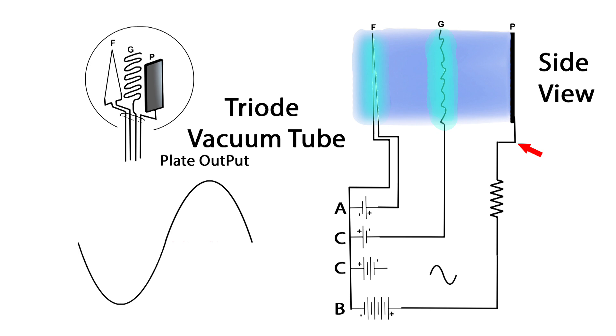Now, there's some other things that I want to point out between the input signal and the output signal at the plate. Other than the size, which is the whole point of this, is to amplify a signal. And the point is, a very small change on the control grid causes a very large change at the plate. Also notice between the input signal and the output at the plate, they are 180 degrees out of phase.